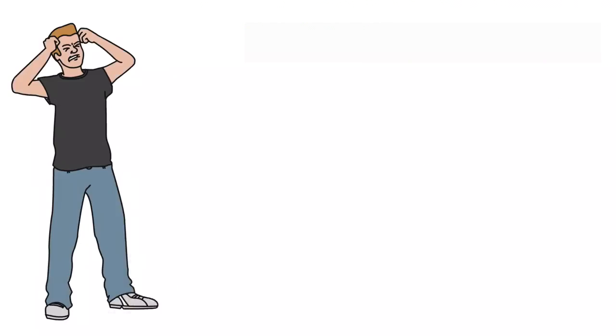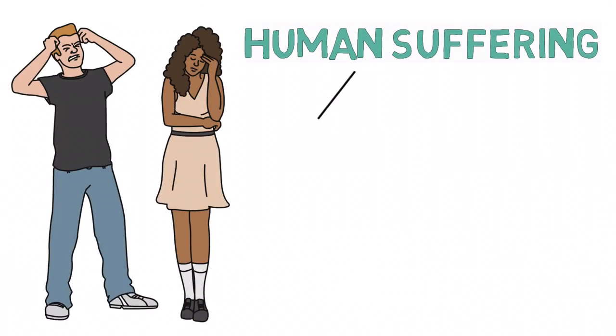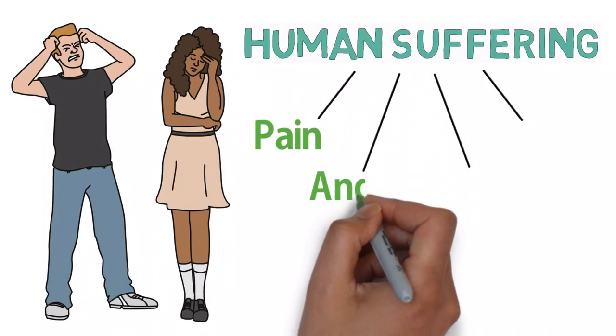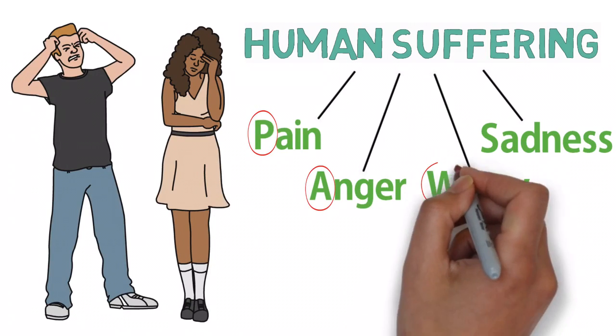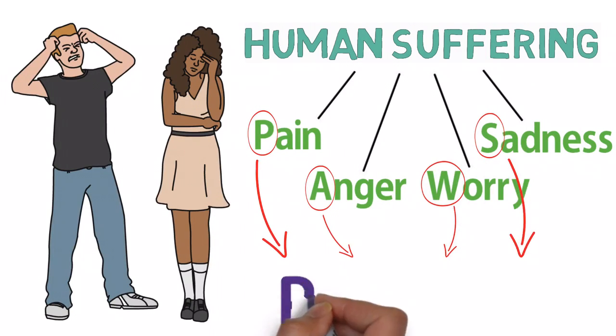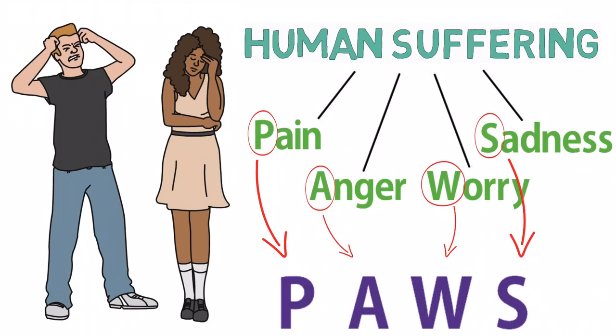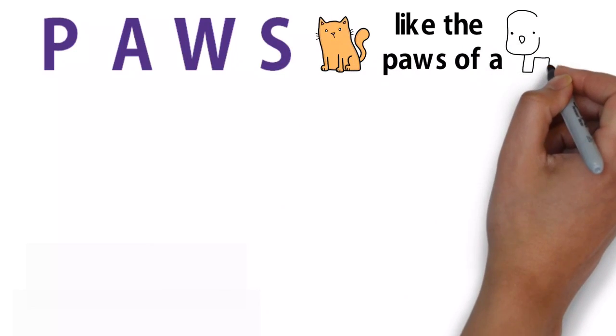All human suffering falls into one or more of the following categories: pain, anger, worry, or sadness. The first letter of pain, anger, worry, or sadness spells the word PAWS, like the paws of a cat or a dog.